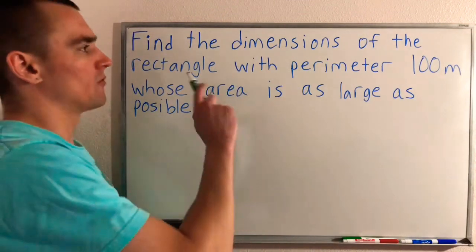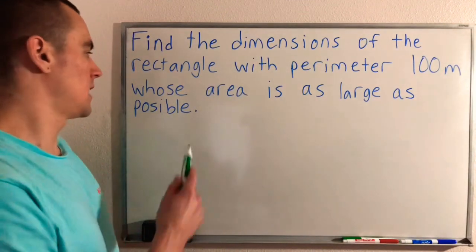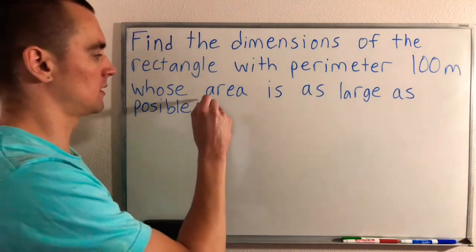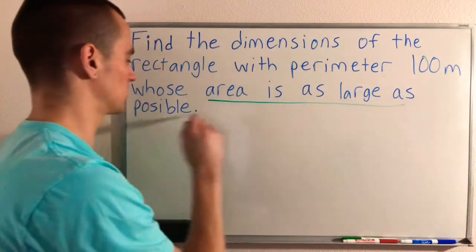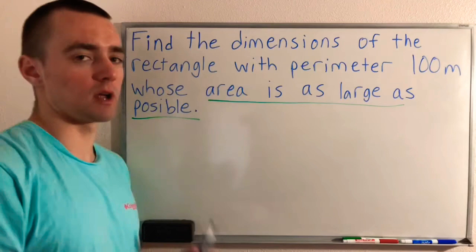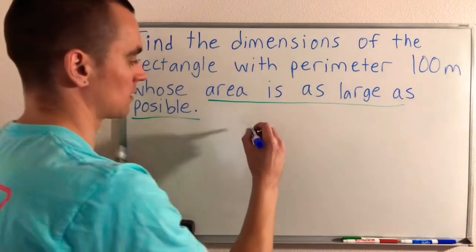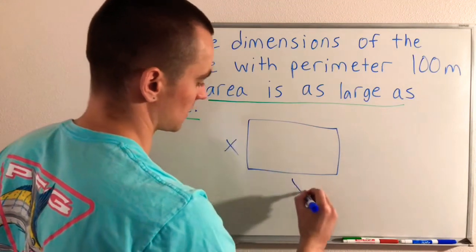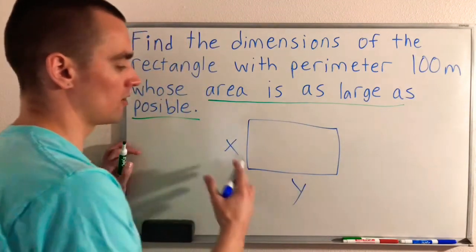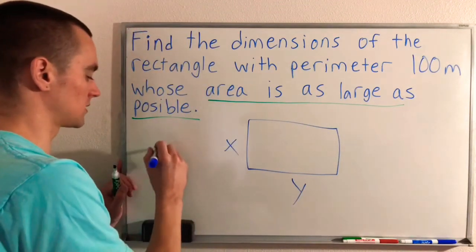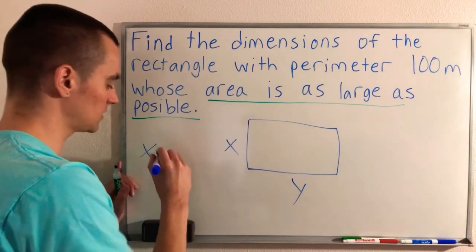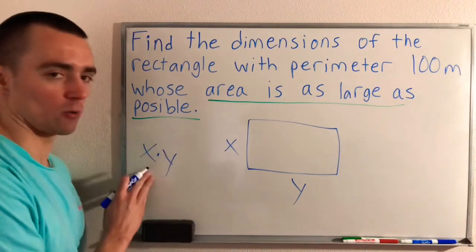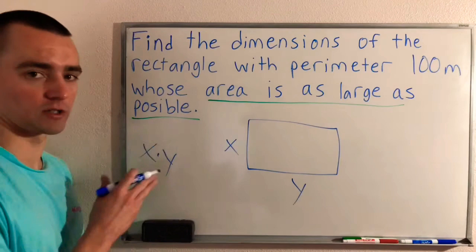Obviously, we are trying to find the dimensions of a rectangle, and what we're trying to do is make the area as large as possible. So if you think about the area of a rectangle, let's think about what a rectangle would be. Let's say this side is X and this side is Y. The area of this rectangle is just going to be X times Y.